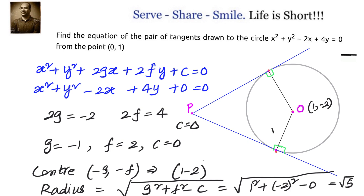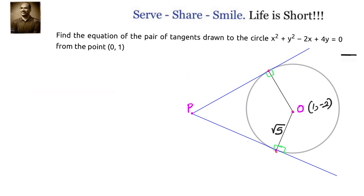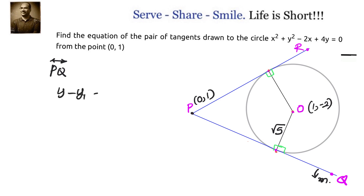The concept we are going to use is that the perpendicular distance from the center to the point of contact equals the radius. For that we need to know the equation of the tangent, which is what we need to find. Let us say the slope of the tangent is m. We have the point, so we can use point-slope form to find the tangent equation in terms of m, then equate the perpendicular distance to the radius to get the values of m, which gives us the equations of tangents.